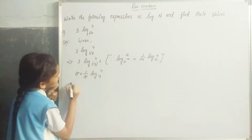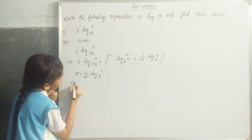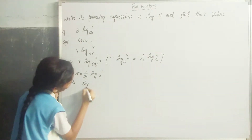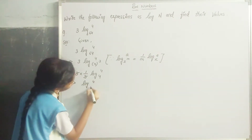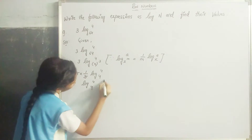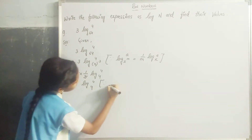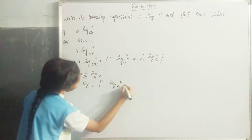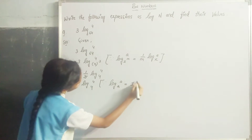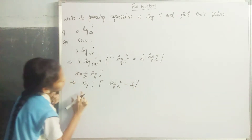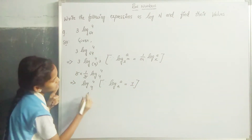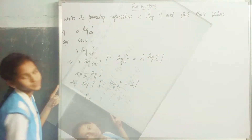3 and 3 get cancelled, giving log 4 to the base 4. Since it is in the form of log a to the base a, which equals 1, then log 4 to the base 4 is also 1.